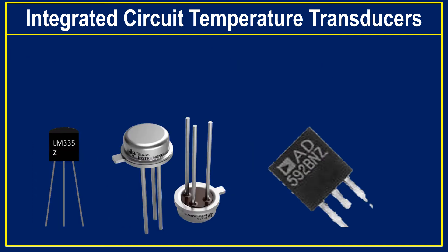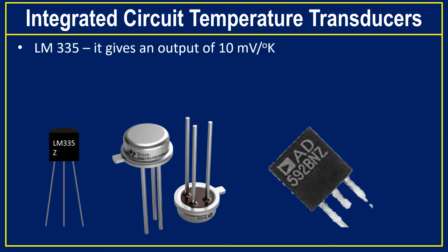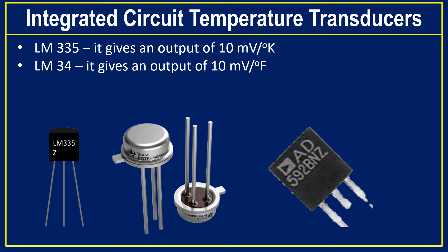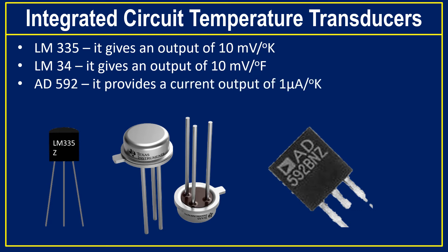The following IC temperature transducers are available: LM335, which gives an output of 10 millivolts per Kelvin; LM34, which gives an output of 10 millivolts per degree Fahrenheit; and AD592, which provides a current output of 1 microampere per degree Kelvin.